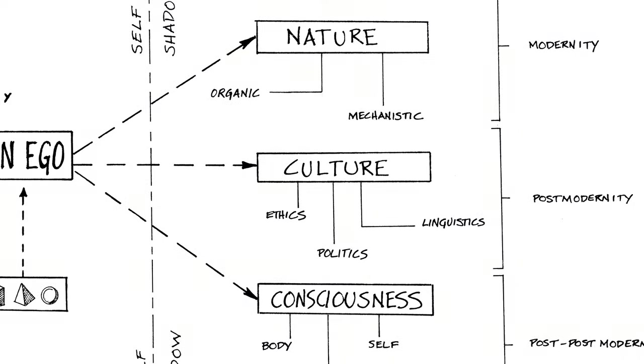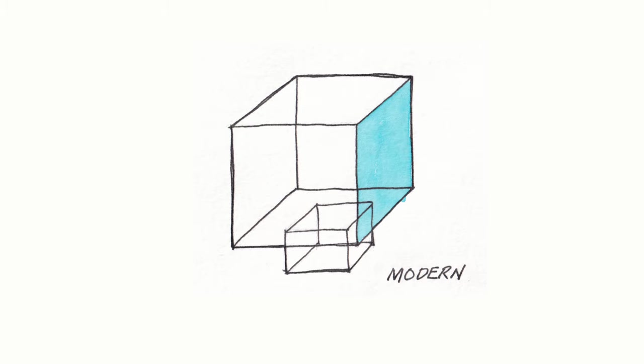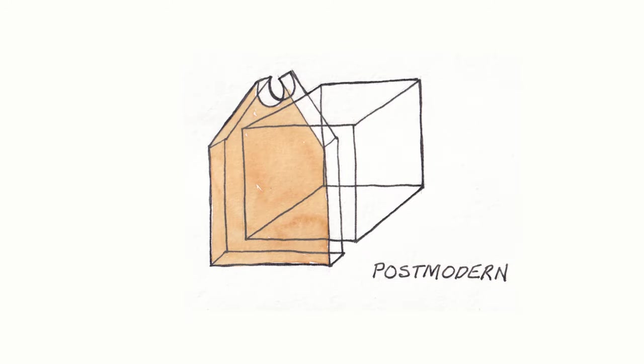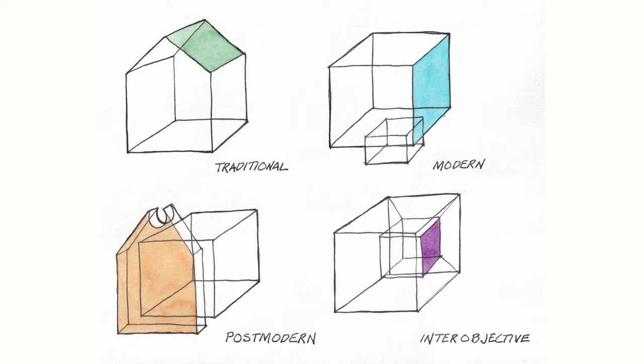The possibilities are endless. Here, I created symbols for traditional, modern, post-modern, and inter-objective architecture. They show how each phase of architecture is based on an underlying theory. These symbols communicate an abstract idea that I could not have communicated with a photograph, for example.